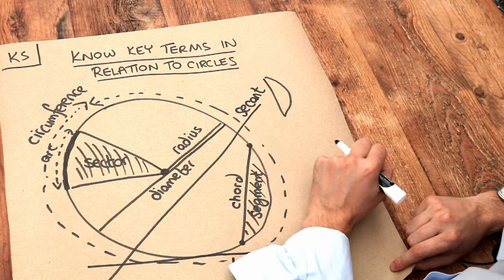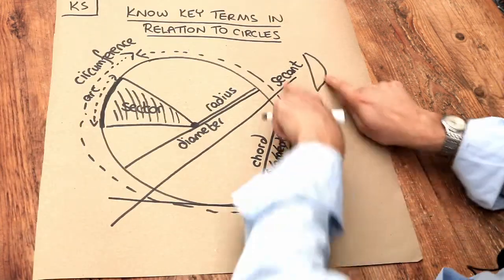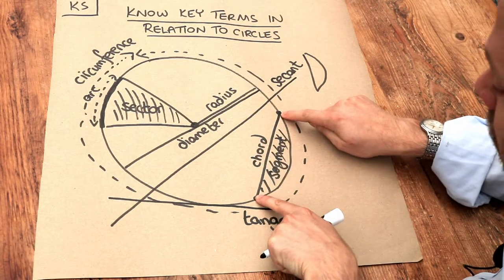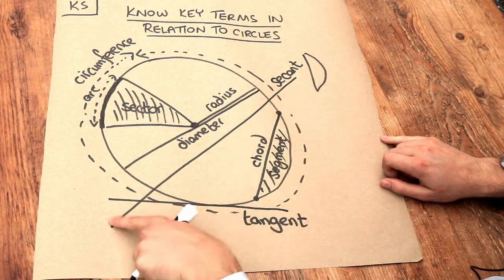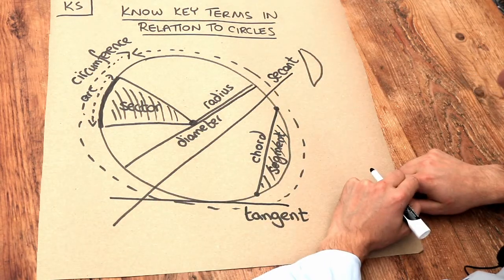It comes from the French 'secare' which means to cut. And you might wonder, what's the difference between a chord and a secant? Well, a chord is a finitely long line which only goes between two points on the circle, whereas a secant is an infinitely long line which cuts through the circle and comes out the ends of the circle.